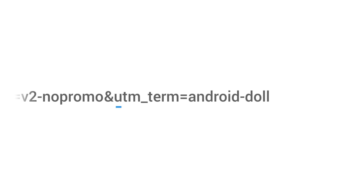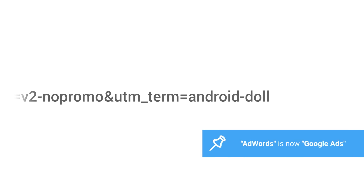Term is used to identify the keywords for paid search campaigns. You would only use this field if you are manually tagging a paid search campaign like Bing or Yahoo. We'll talk about the best way to track Google AdWords in a later lesson.